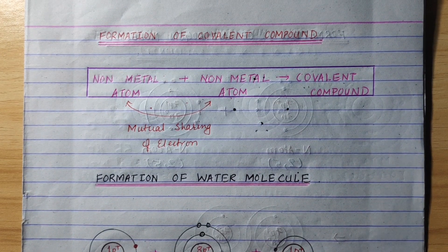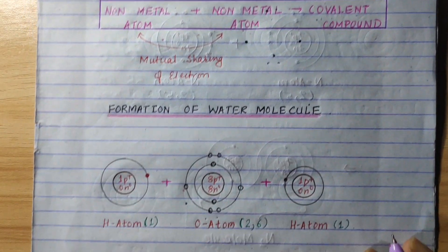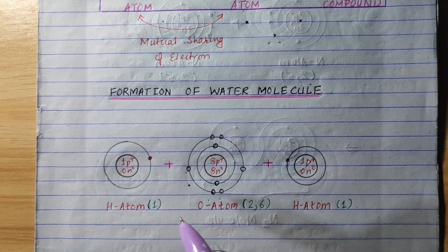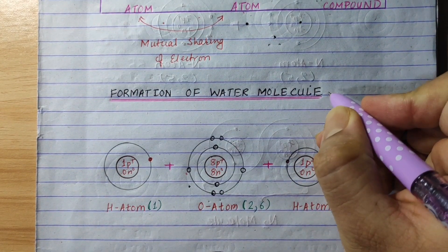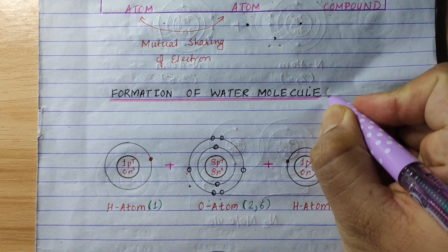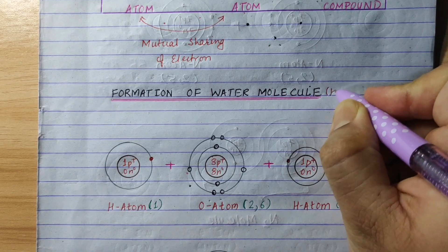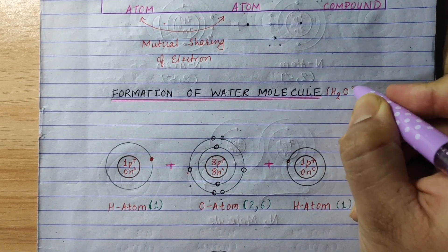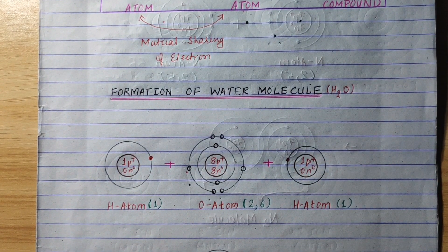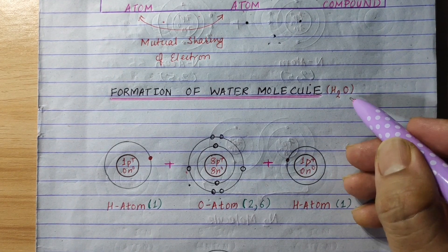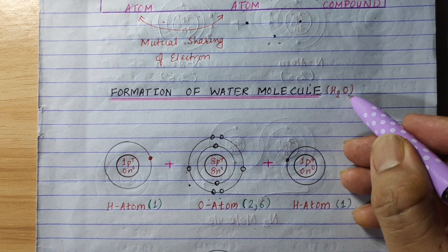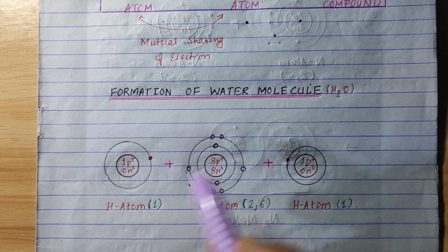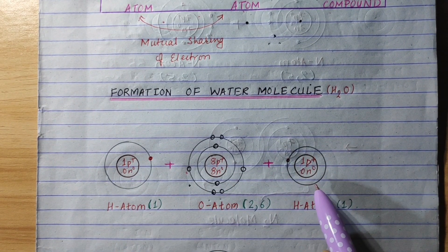As our first example, we have the formation of a water molecule, H2O. H2O is composed of hydrogen atoms and an oxygen atom. The oxygen atom is bonded to hydrogen atoms in this molecule.